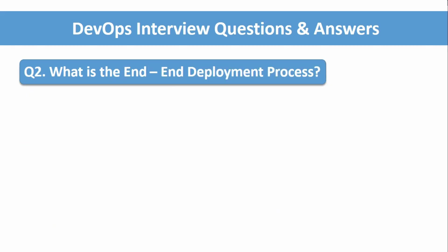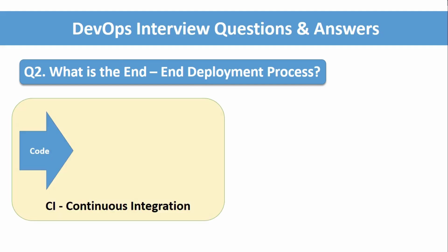The next question: what is the end-to-end deployment process? This is a very important question if you are going for a DevOps interview. To explain the CI/CD pipeline, CI stands for Continuous Integration and CD for Continuous Deployment. The first step in the CI/CD pipeline is source code management — our source code is stored on Git, GitHub, GitLab, Bitbucket, or similar. Once we make code changes and push to a particular repository or branch, our pipeline will trigger.